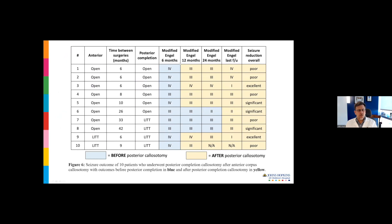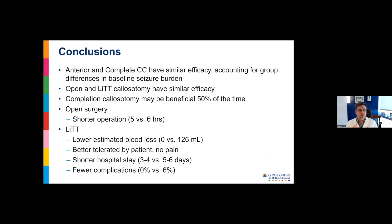This is looking at the subset of patients who failed in the initial disconnection or were offered a second disconnection. Blue was their status after completion of their first disconnection, yellow is their Engel status after offering a second stage. About half the patients flip into a good outcome if you offer a second disconnection. So looking retrospectively at this data, anterior and complete have similar efficacy, accounting for group differences in baseline seizure burden. Open and lit have similar efficacy as long as you're able to achieve a good disconnection with the laser.